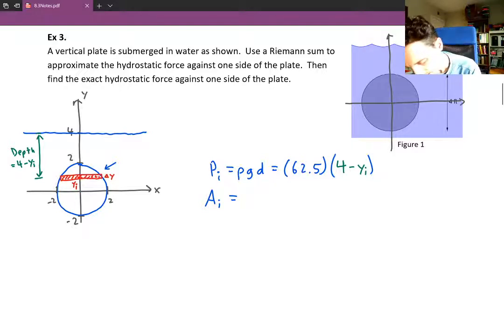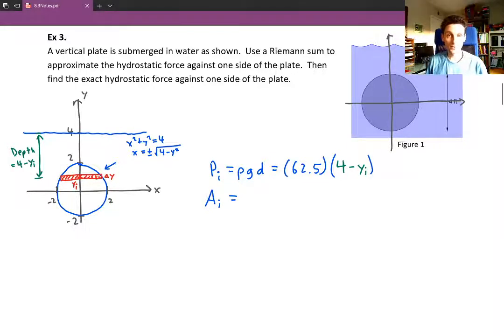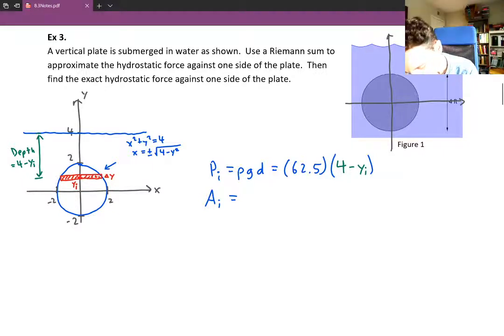So what we can do is figure out a formula for the right x value and the left x value. Now we know that x squared plus y squared equals 4 is going to be describing that whole curve. But we're going to solve that for x. So we get x equals plus or minus the square root of 4 minus y squared. The positive x is on the right and the negative x is on the left. So on the right side, we'll have x equals positive square root of 4 minus y squared. And on the other side, we have x equals negative the square root of 4 minus y squared.